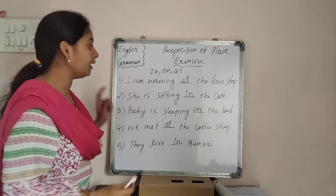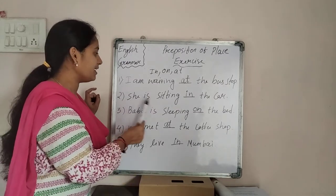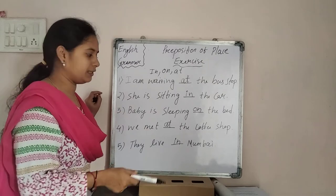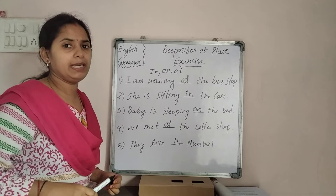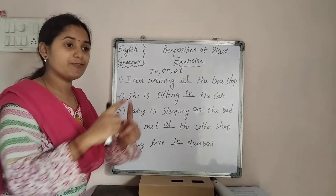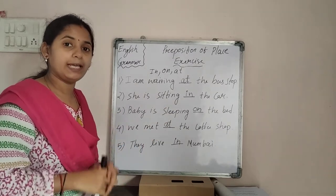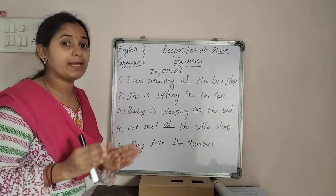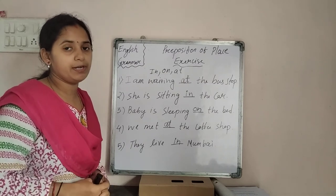Let's recap: I am waiting at the bus stop. She is sitting in the car. Baby is sleeping on the bed. We met at the coffee shop. They live in Mumbai or London. If talking about a place with a region, use in. Hope you understood. In the next video we will discuss some complex types of prepositions.